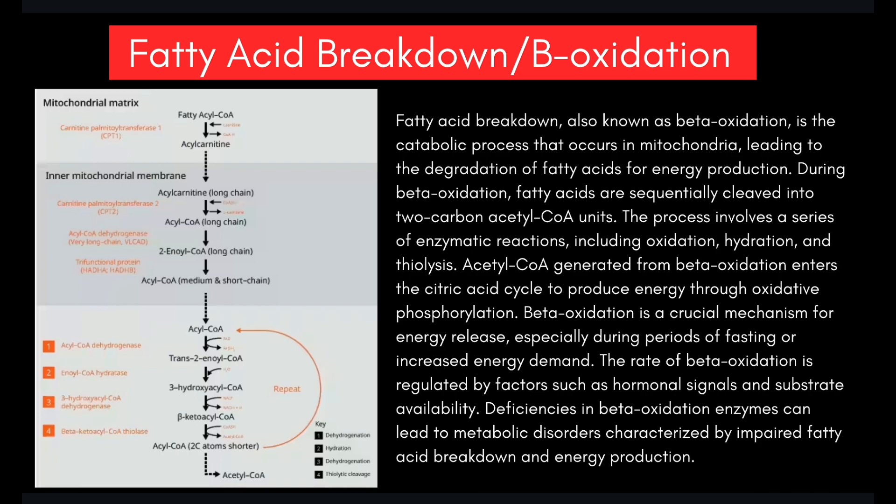The rate of beta oxidation is regulated by hormonal signals and substrate availability. For instance, increased levels of glucagon and decreased insulin can enhance beta oxidation. Beta oxidation is an efficient process for energy production — each round generates one molecule of acetyl-CoA, FADH2, and NADH, which contribute to ATP production through oxidative phosphorylation.